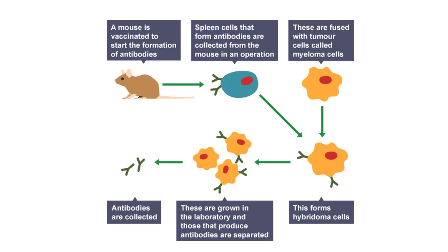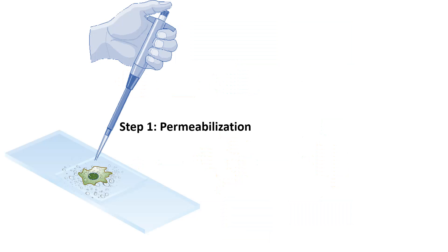Secondary antibodies are generated in a similar manner. In the case of secondary antibody generation, the antigen injected into the host is the Fc region of the primary antibody. Now here is the process of immunohistochemistry itself.